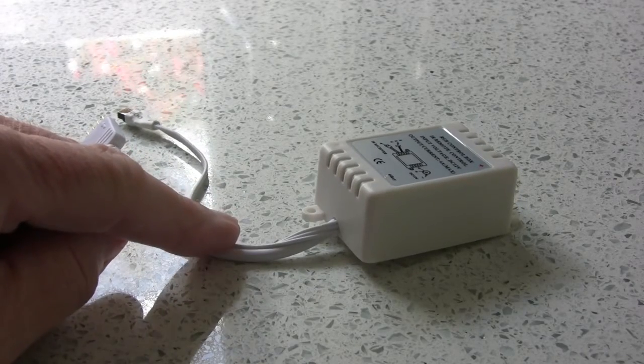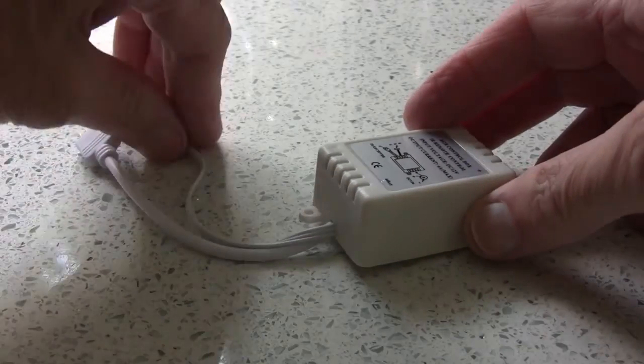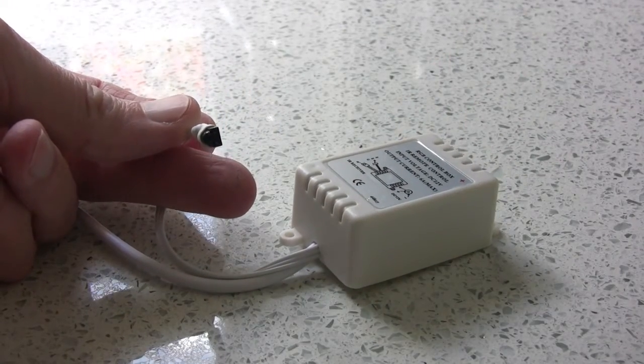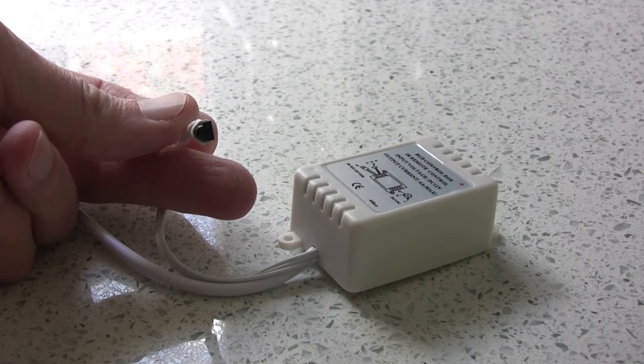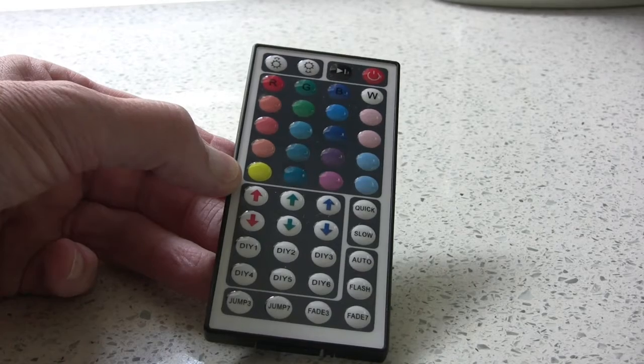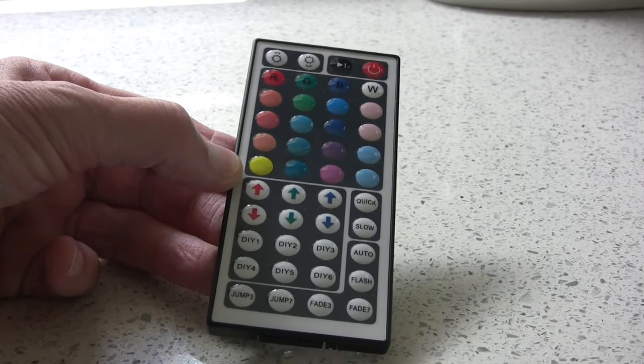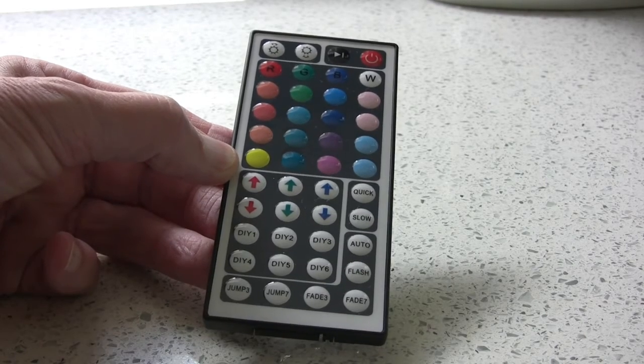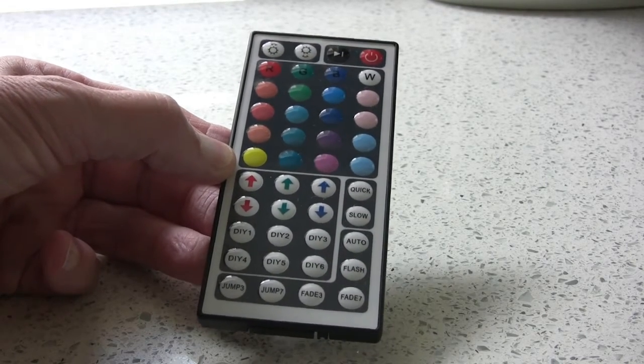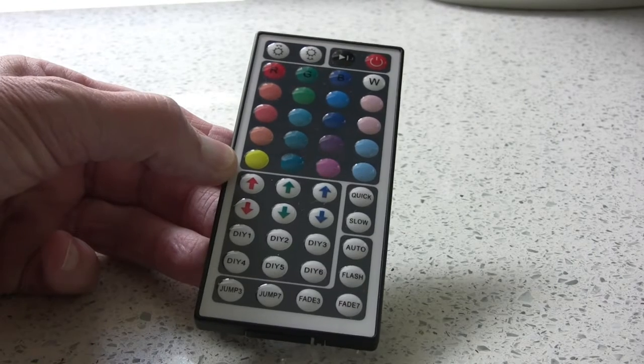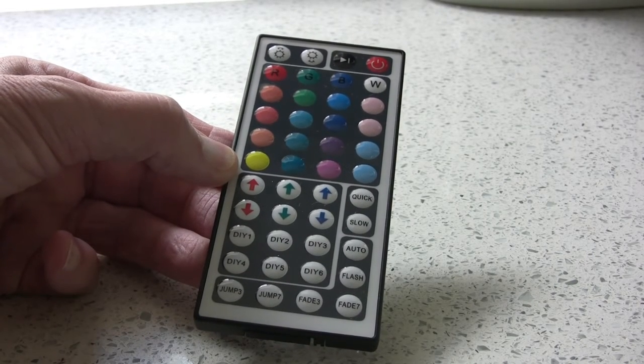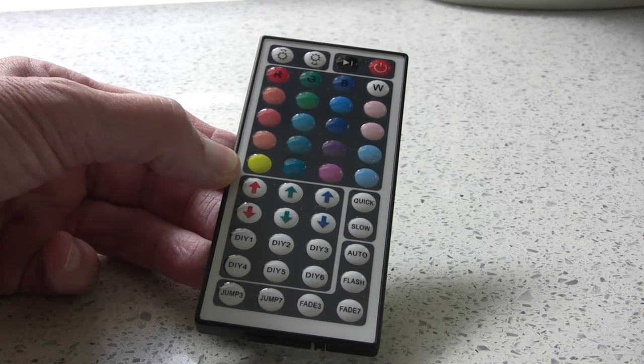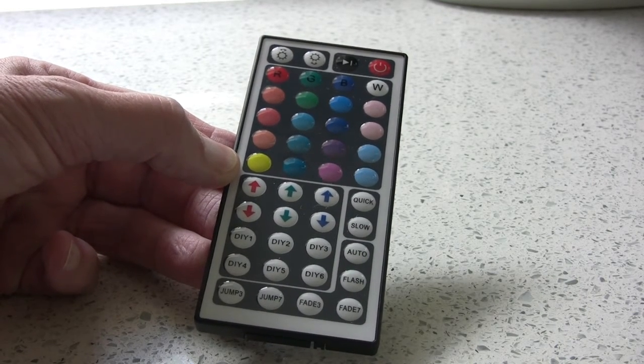Included in the kit is this little controller, because being RGB you've got to have some way to control the LEDs. The end here has a small infrared diode to detect the remote control. This is the remote control and it's an unusually good one. It really looks smart and includes a little battery, which you normally pay a couple of dollars extra for.